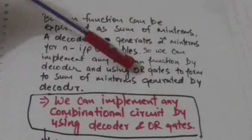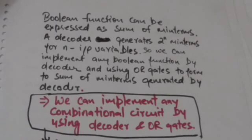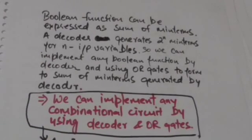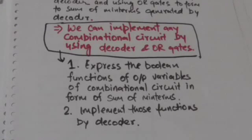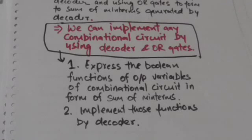So we can implement any boolean function by using a decoder and an OR gate to form the sum of minterms generated by that decoder. First of all, we will express the boolean function of output variables of the combinational circuit in the form of sum of minterms, then we will implement those functions using decoders.